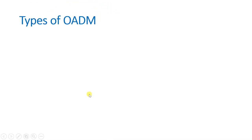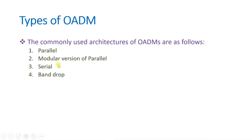Now let us see the different types of OADM. There are four commonly used architectures: one is parallel OADM, second is the modular version of parallel OADM, third is serial OADM, and fourth is band drop OADM. We will see each OADM in detail.